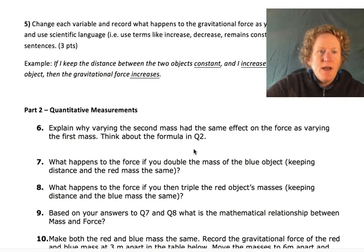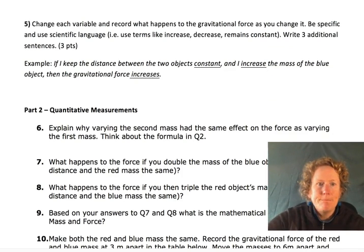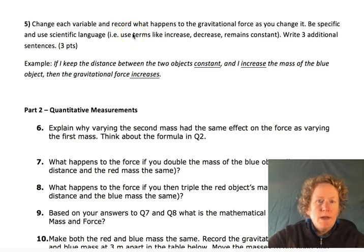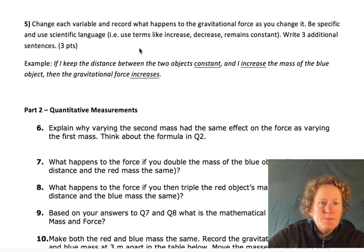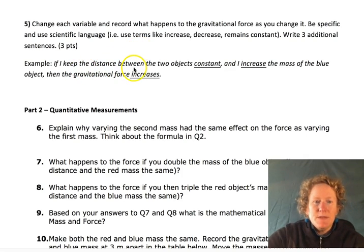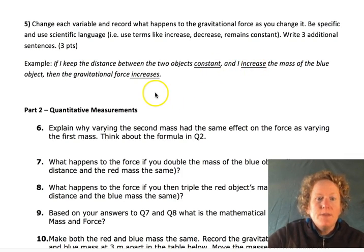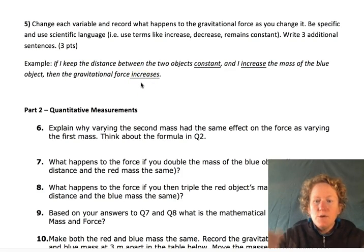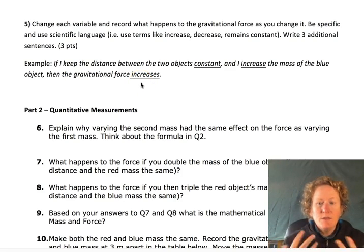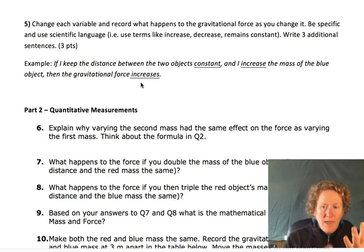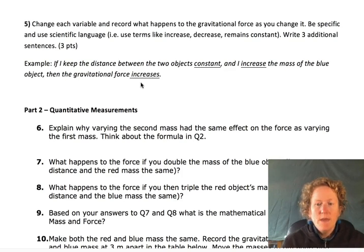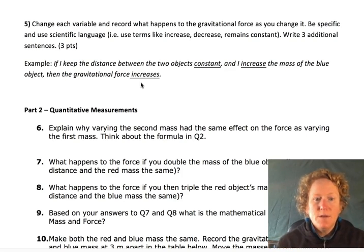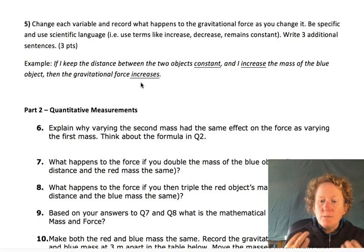So for number five, you need to go into the simulation, change each variable, and record what happens to the gravitational force. That's the force at the top. Use scientific language. For example, if I keep the distance between the two objects constant and I increase the mass of the blue object, then the gravitational force increases. So you want to look at, go into the simulation and look at the relationships between the mass and the distance and the force, and then you want to write down what you find out. So basically, this is an opportunity for you to just go into the simulation and play a little bit and write down what you learned.